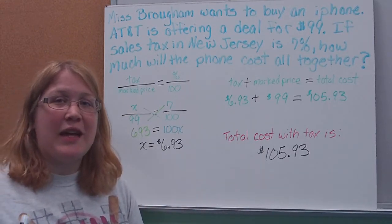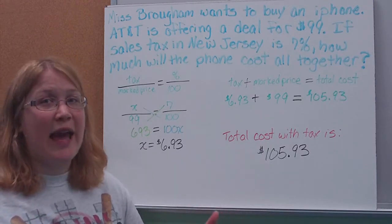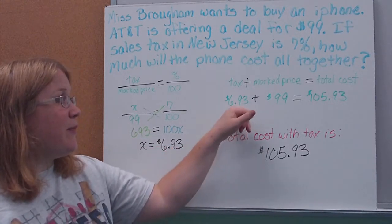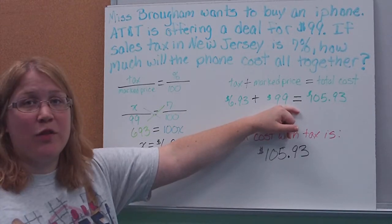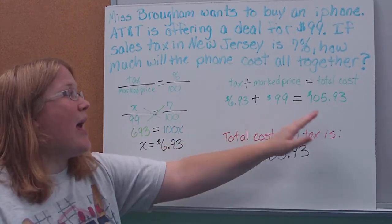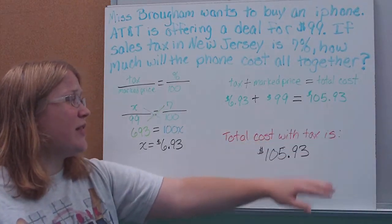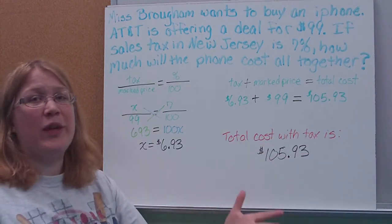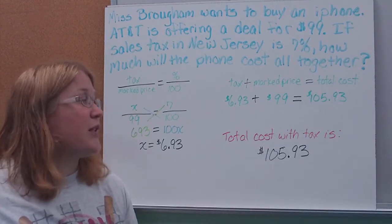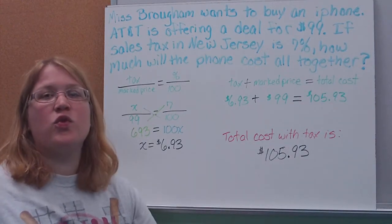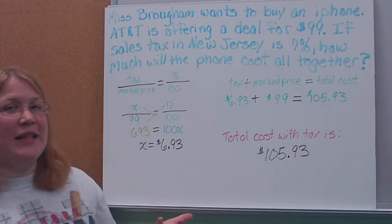However, the question asks, how much is it costing altogether? So I need to take my tax, add it to my marked price, or my original price, and then I can get my total price. So when I add those together, I find that the total cost with tax would actually be $105.93. So it's always a little more, because we have to add in that tax.